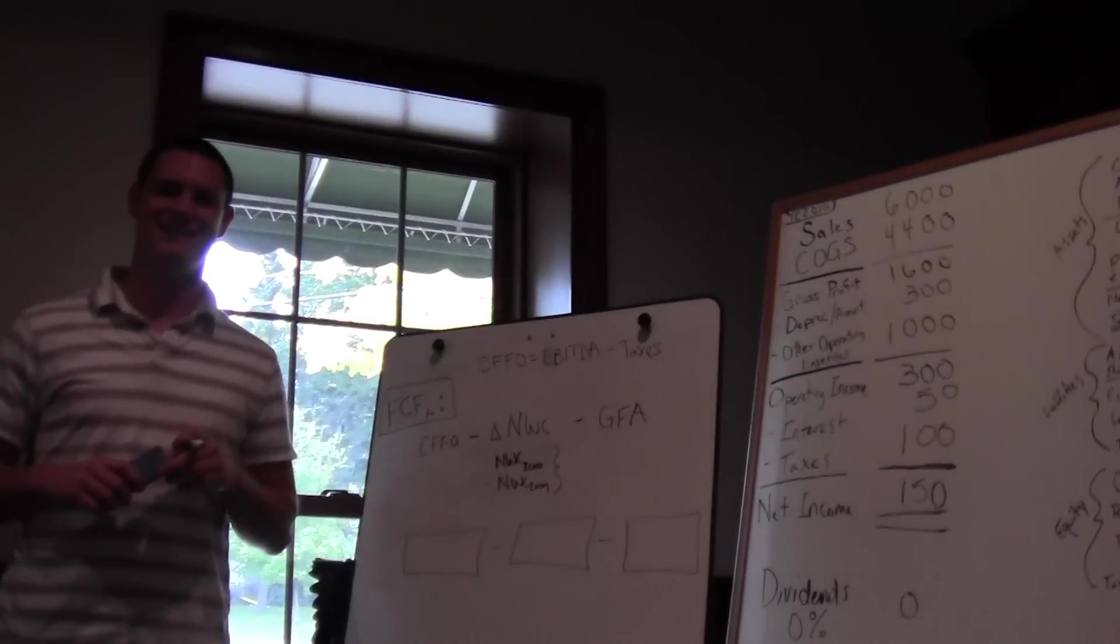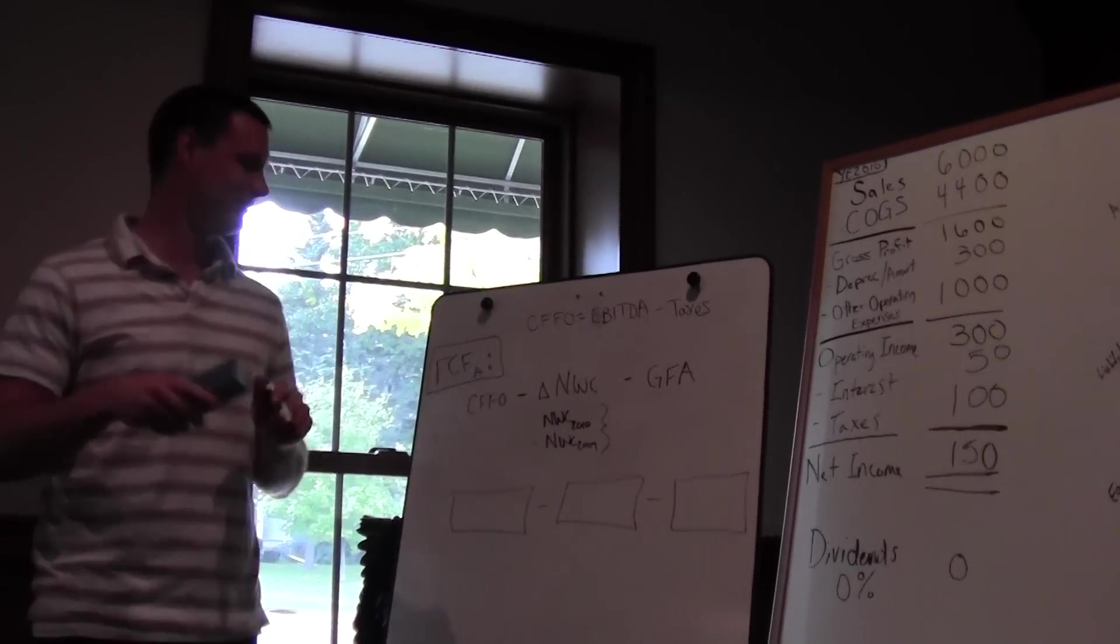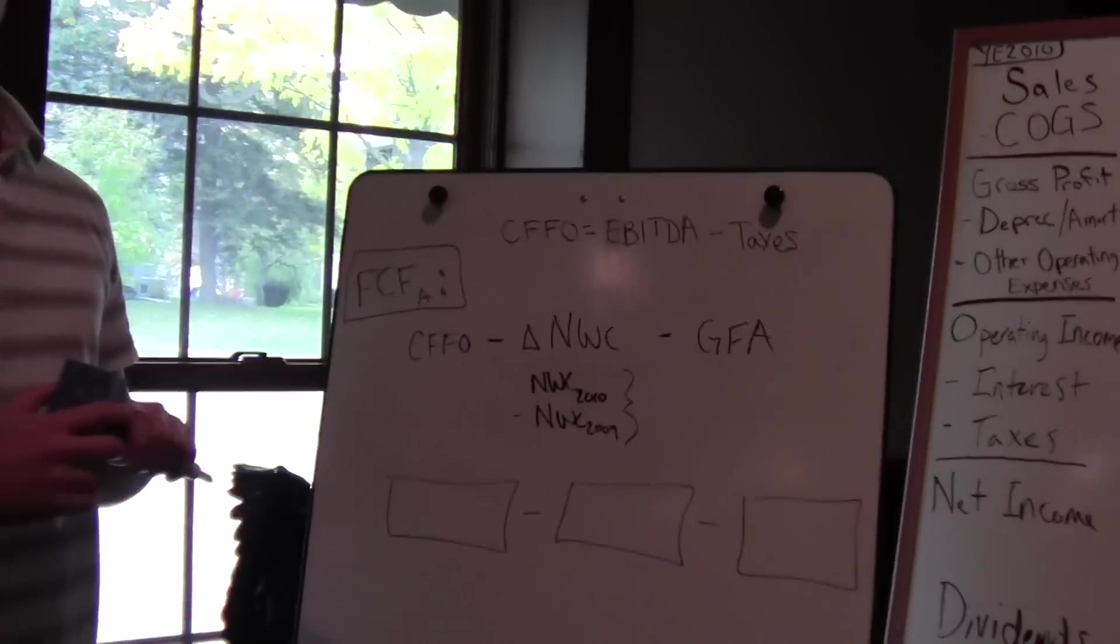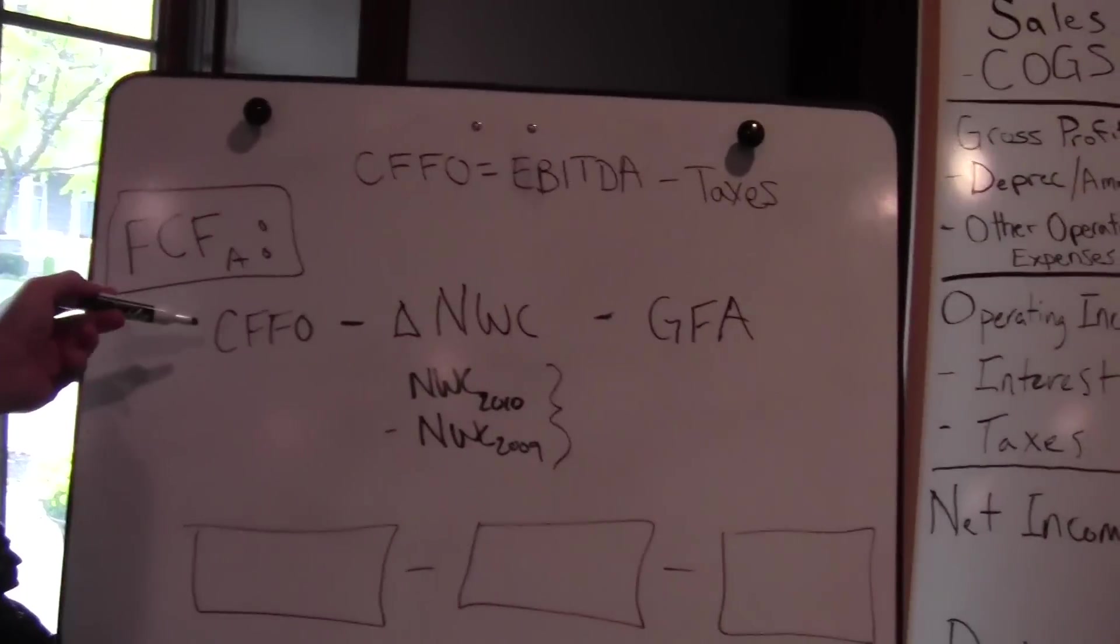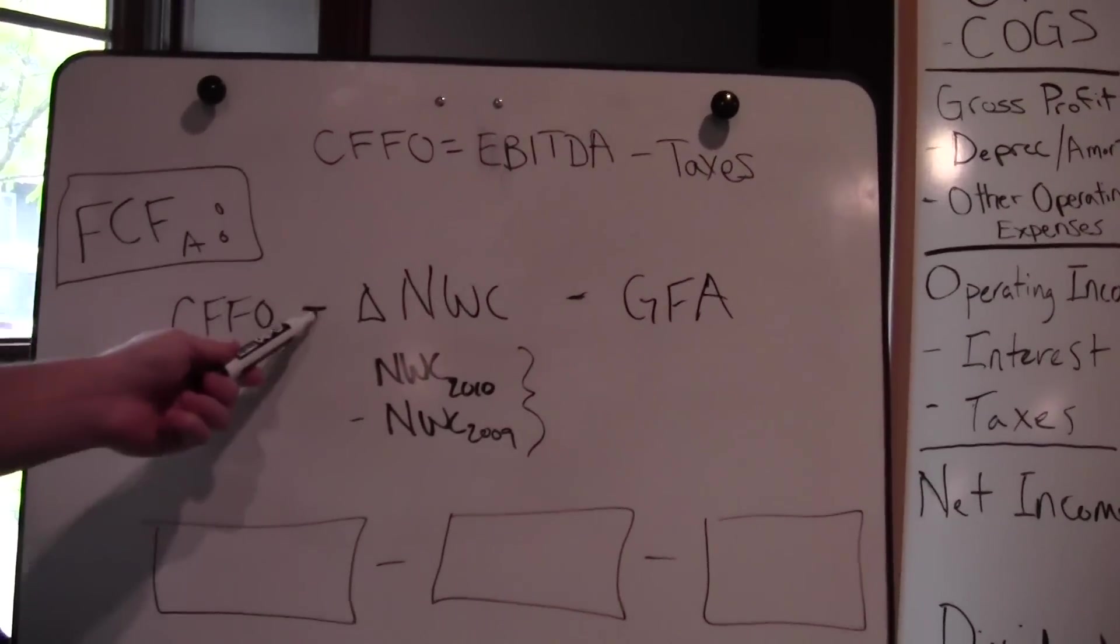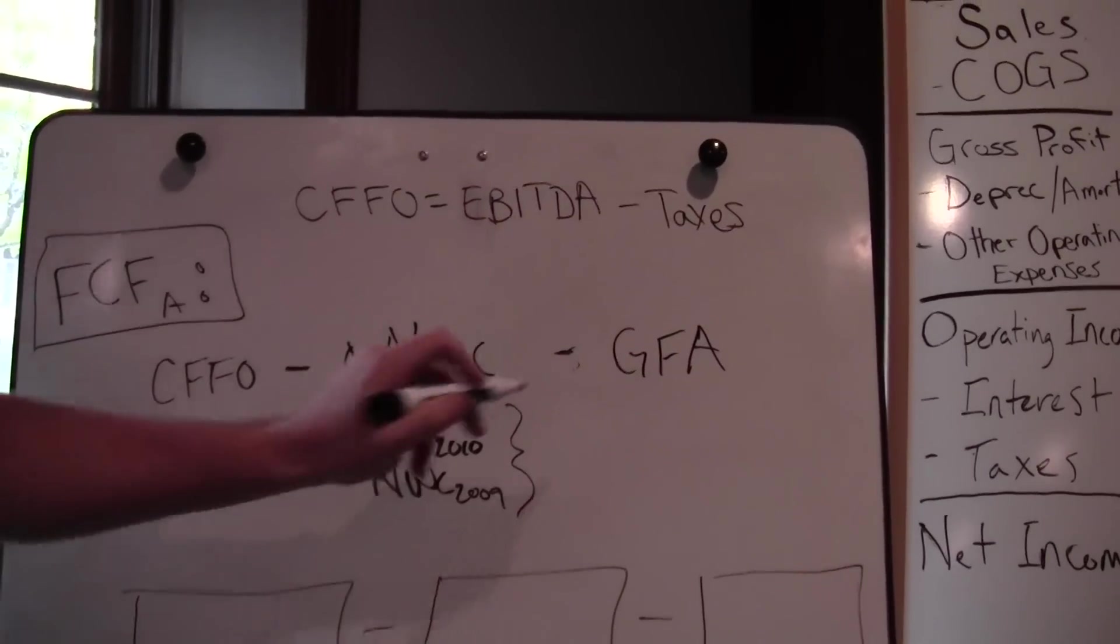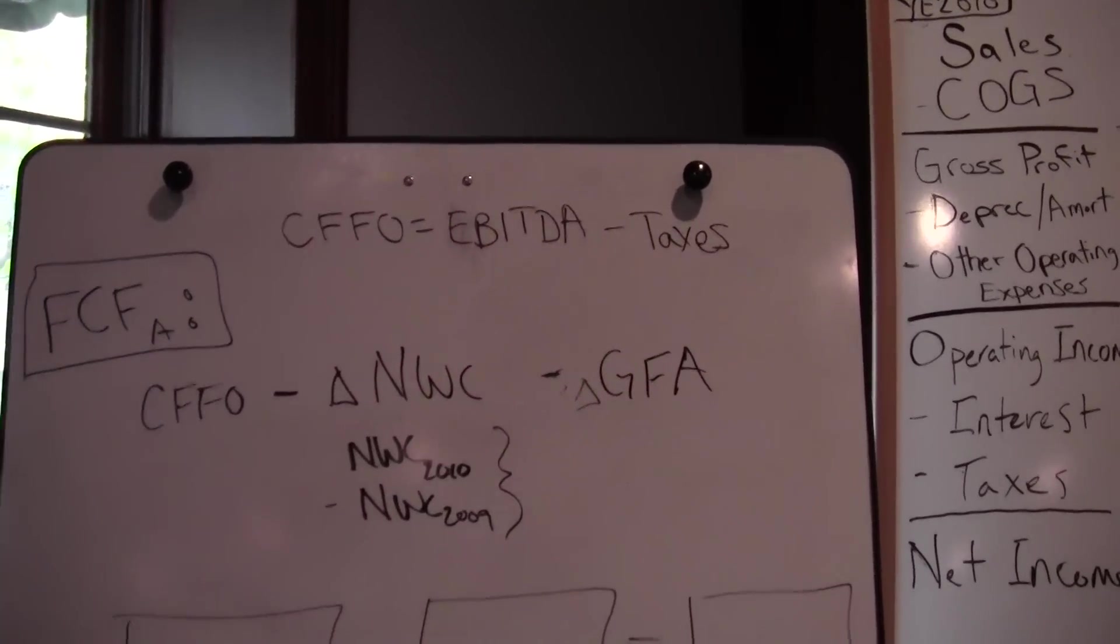Hello Sean, could you take us through some free cash flow? I will Lori, and what we have here is our equation, our free cash flow from an asset perspective. We take our cash flow from ops, subtract out our change in net working capital, and also subtract out our change in gross fixed assets.